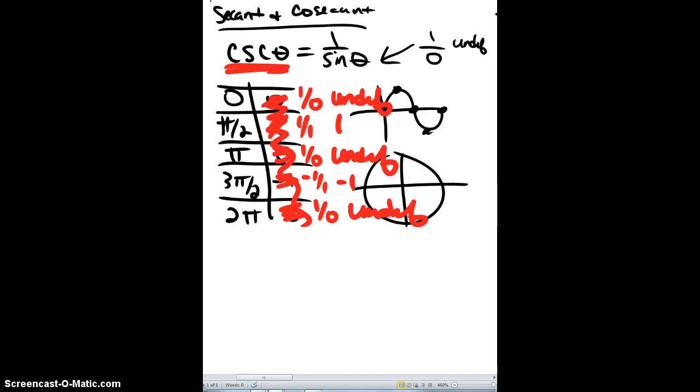All right, so how in the world does that help us graph? All right, so let's make our typical thing here. This is 1, this is negative 1, and then we have our little tick marks here.